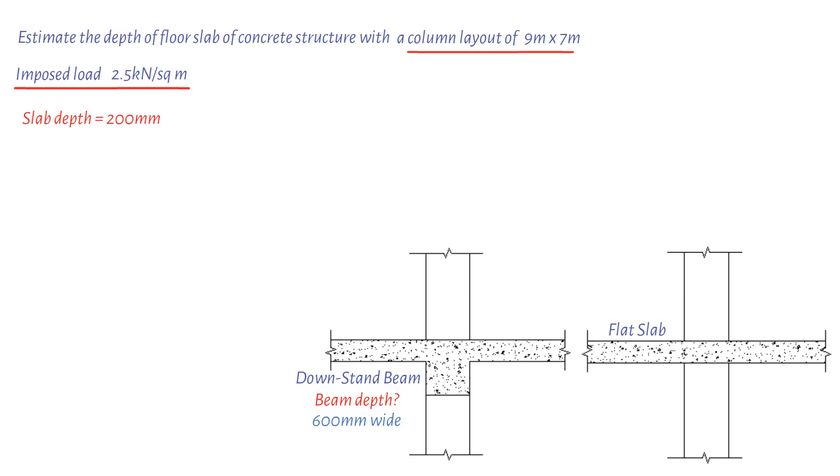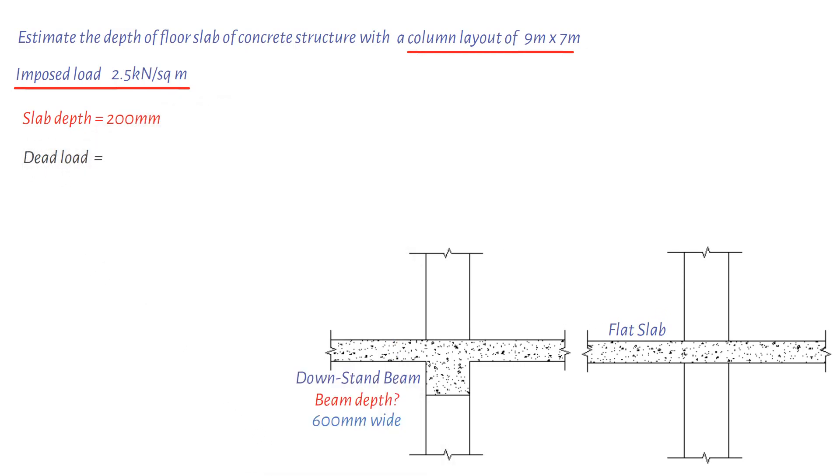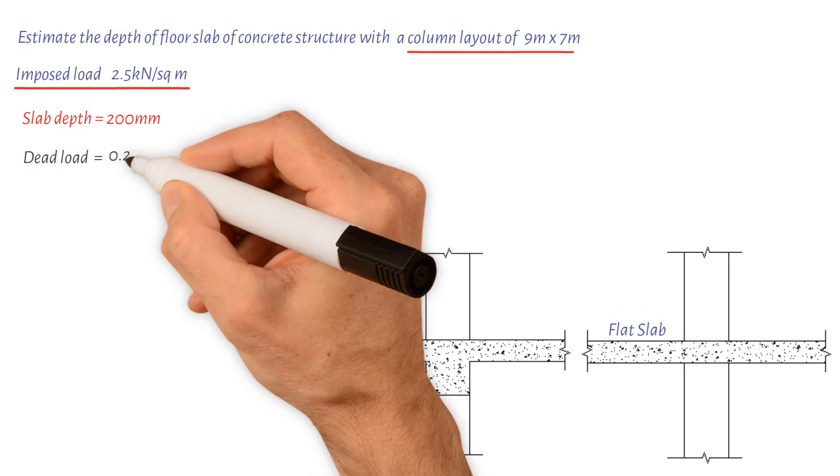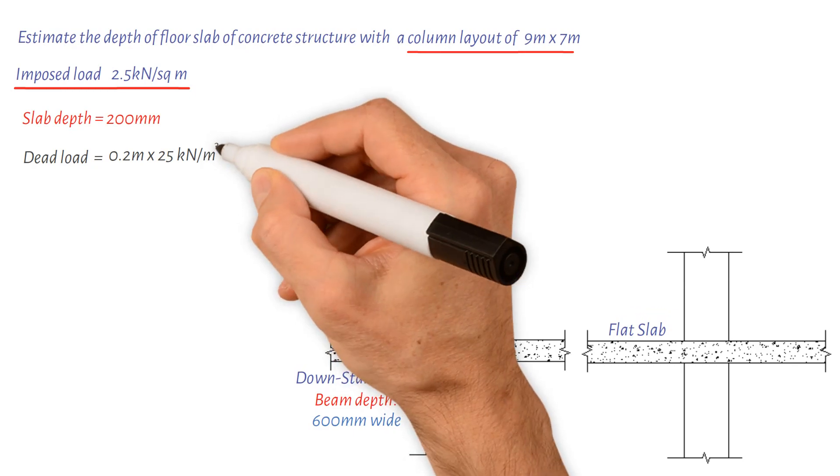Beam depth: we must determine the uniformly distributed load on the beam before determining its depth. So dead load for a slab equals slab thickness 0.2 meters times concrete density 25 kilonewtons per cubic meter times 7 meters. This gives us a value of 35 kilonewtons per meter.